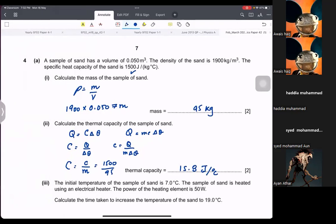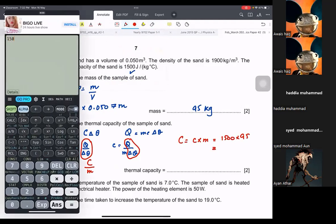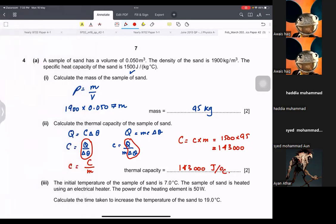I made a mistake. Sorry. You see Q upon delta theta here. It means heat capacity is the thermal capacity divided by mass. So thermal capacity is heat capacity times mass. So 1500 times 95. I was like, why is it so small? So basically, you can write it as 143,000 joules per degree celsius.